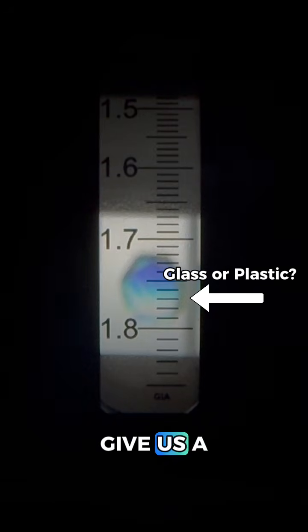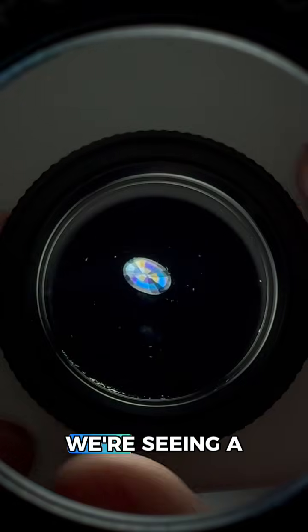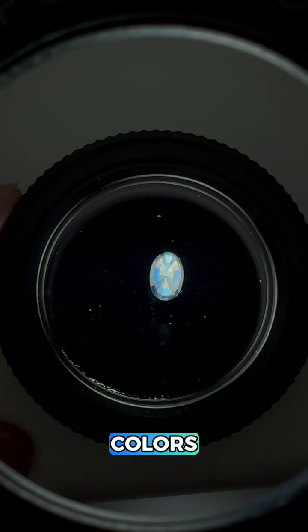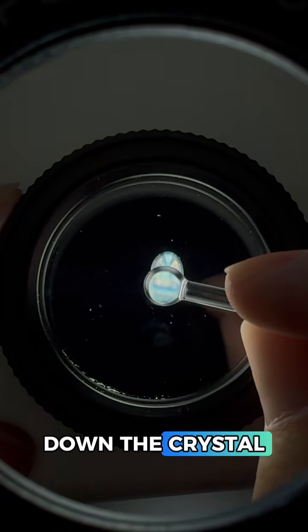So let's go to the polariscope. We're seeing a nice blink which is how a sapphire should react. You can also see some rainbow-like interference colors which could mean we're looking down the crystal axis.